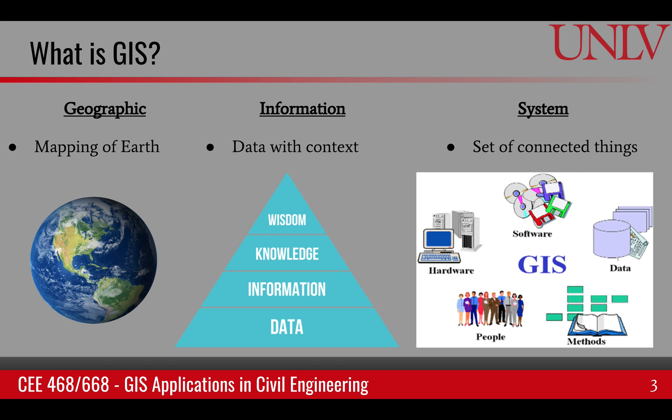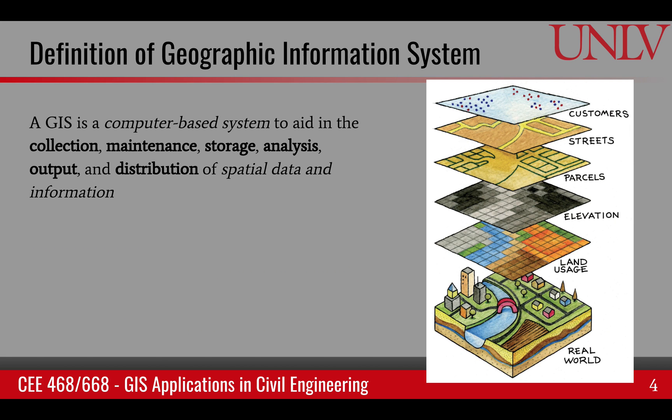System is a set of connected things. In the case of GIS, it includes data, software, hardware, methods, and people — they all constitute the GIS. The definition of GIS is: a computer-based system to aid in the collection, maintenance, storage, analysis, output, and distribution of spatial data and information. There are a lot of keywords in this definition and we will go through them one by one.